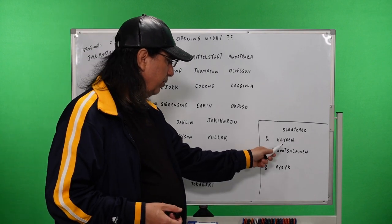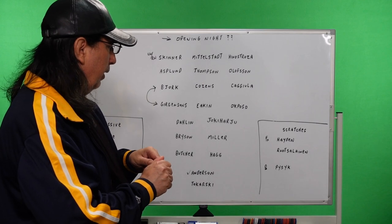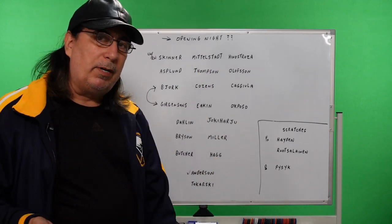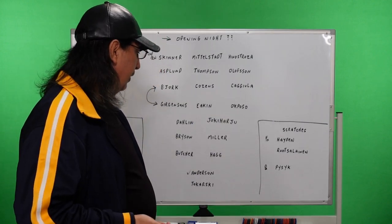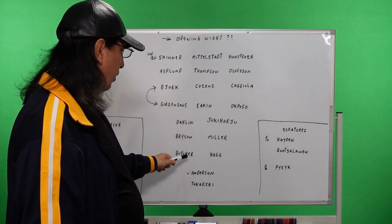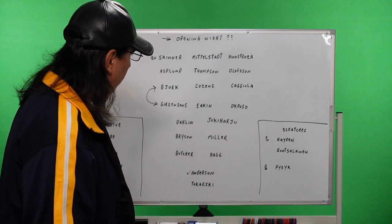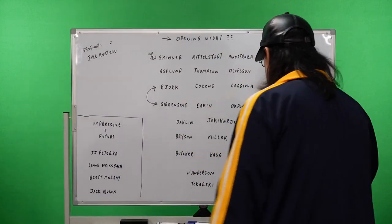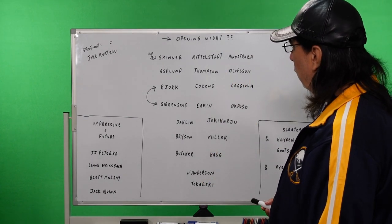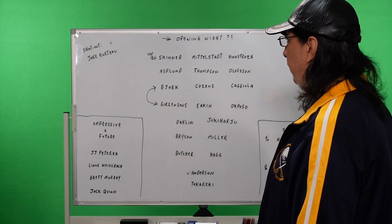The scratches, I have Hayden, Ruotsalainen, and on defense, I got Pysyk. And nothing against any of those guys. I just think this is kind of what we're going to go with in the first game. I could be wrong. And these three could be in and Hagg could be out. There's no way to know. Butcher could be out. I should say, I'd have Hagg in before Butcher. Hayden, I would like to have his size in the lineup, but I think we're going to go in game one with as much speed as we can. I think this is going to be the strategy.